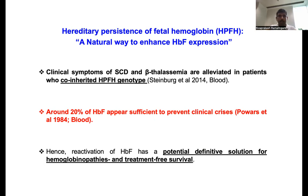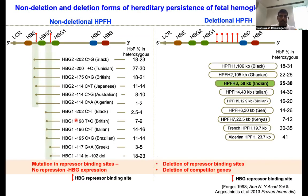Around 20% of fetal hemoglobin is sufficient to prevent clinical crisis — we don't need to reactivate 100%. Hence, reactivation of fetal hemoglobin has potential as a definitive solution for hemoglobinopathies and treatment-free survival. There are non-deletional and deletional forms of natural HPFH mutations.